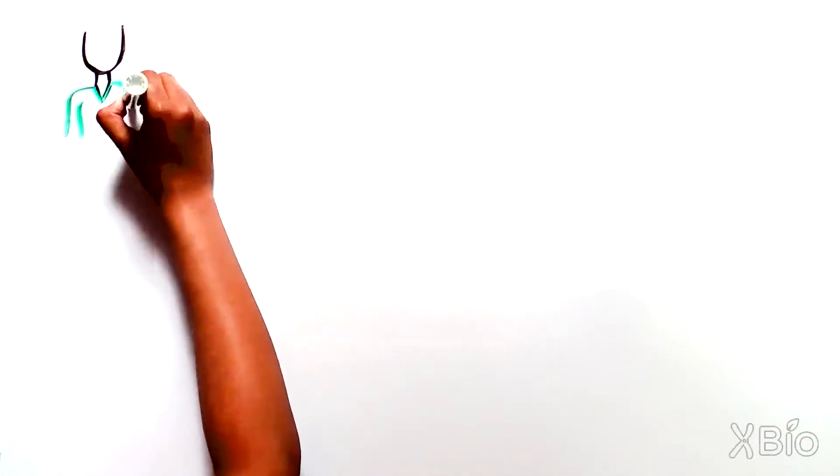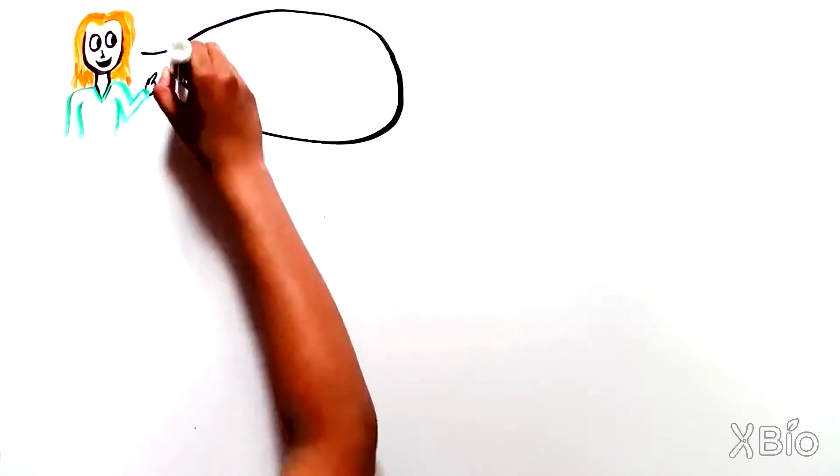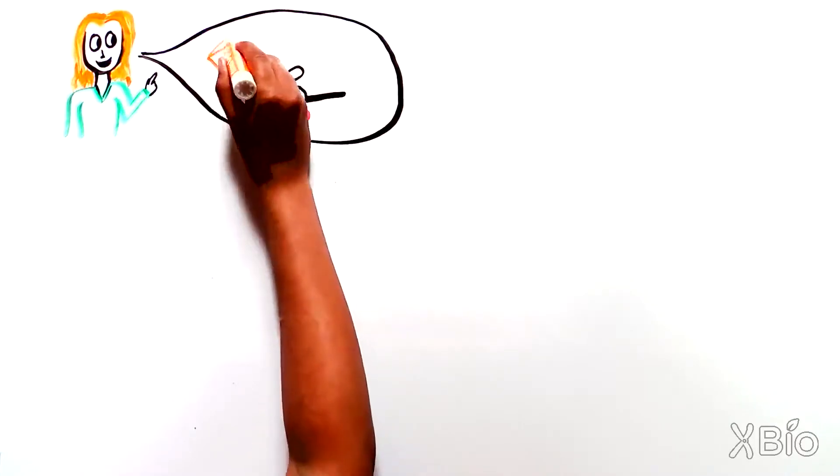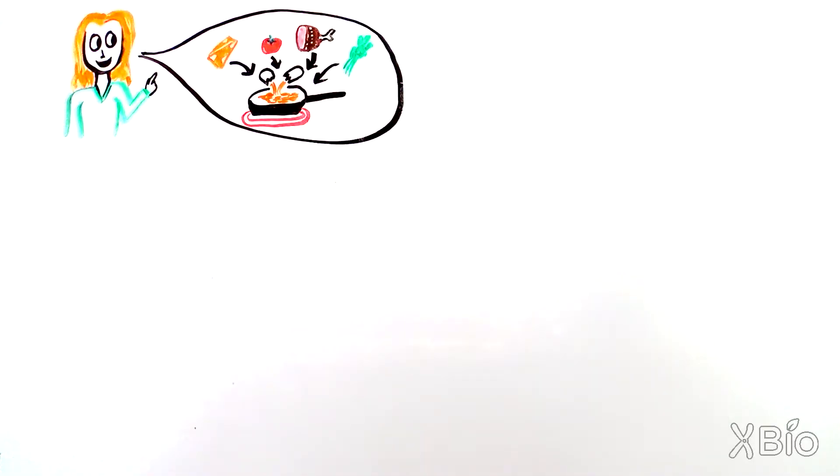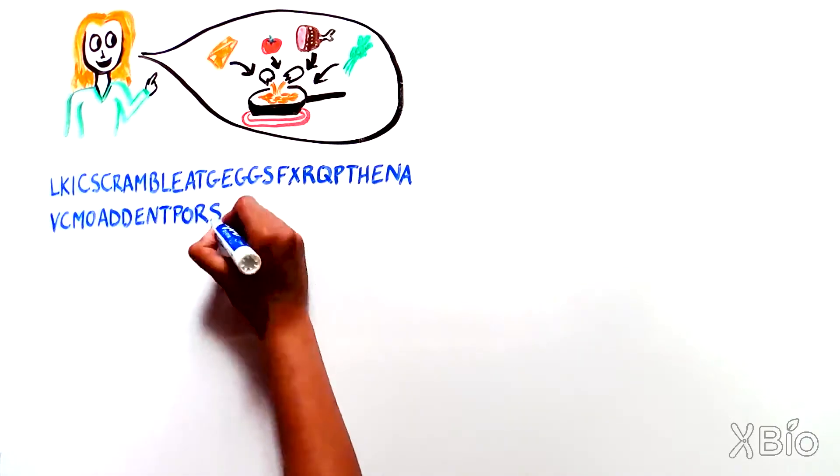Let's say you are making brunch for your friends, and one person asks you to scramble eggs, then add Swiss cheese, tomato, ham and spinach. It seems simple, but in our cells, this sentence would look like this.